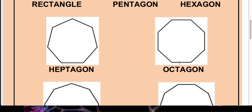Next, see how many sides are there for this shape: one, two, three, four, five, six, seven, eight — eight sides. An example: octopus hota hai na? Octopus ke aath arms hote hai. Similarly, this shape with eight sides is known as octagon. The closed shape which is having eight sides is known as octagon.